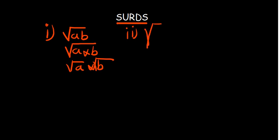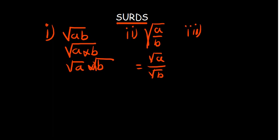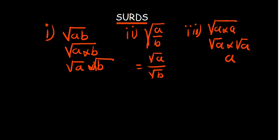The second rule: if you have a fraction under a square root — say a over b — this equals the square root of a divided by the square root of b. The third rule: the square root of a multiplied by the square root of a gives you a, because this is the same as the square root of a squared — the square and root cancel, leaving just a.